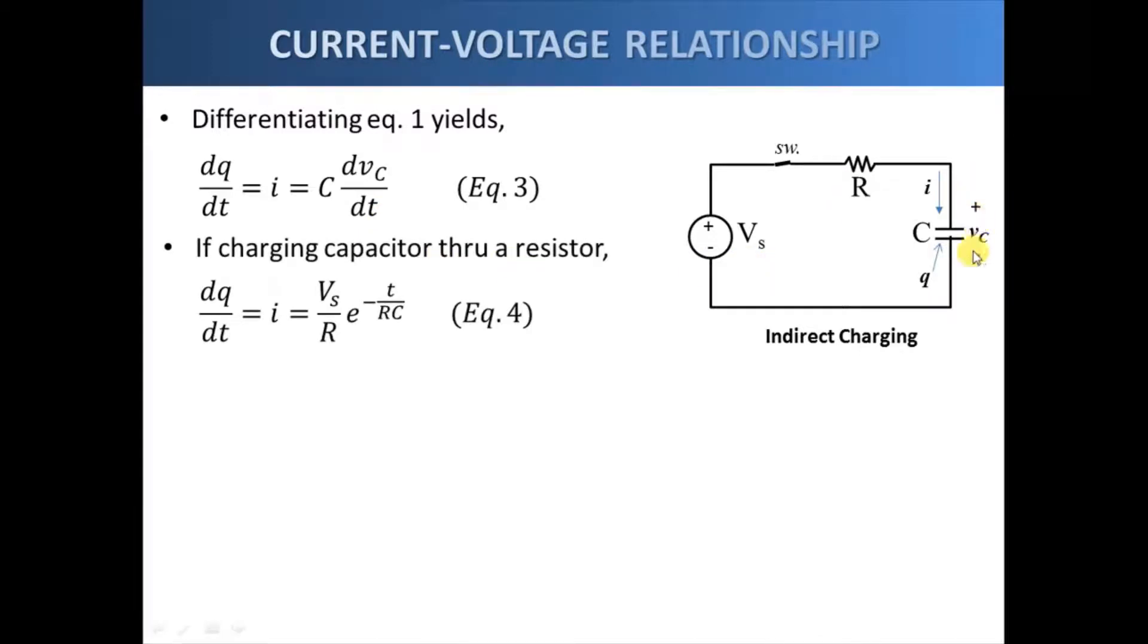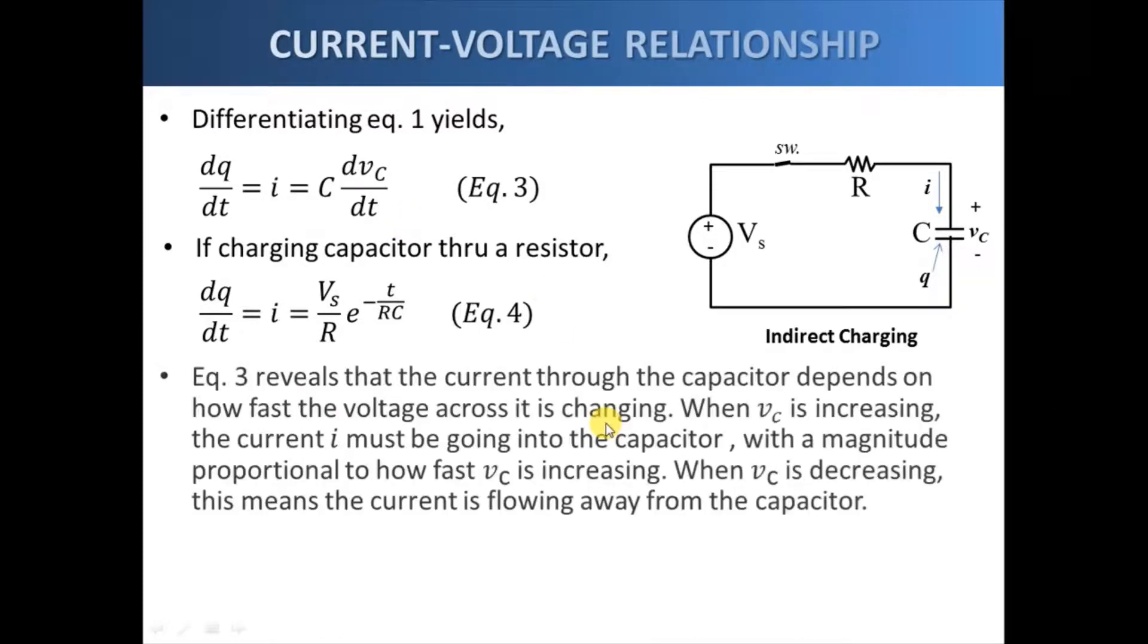Now if we apply this to the series RC circuit, we have an i that is a decaying function that starts at the maximum value v sub s over R, and then as time progresses this current will decay towards the zero value.